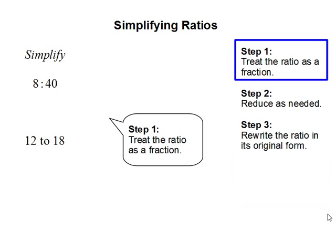Step 1. Treat the ratio as a fraction. So 8 to 40 can be written as 8 over 40, and 12 to 18 can be written as 12 over 18.